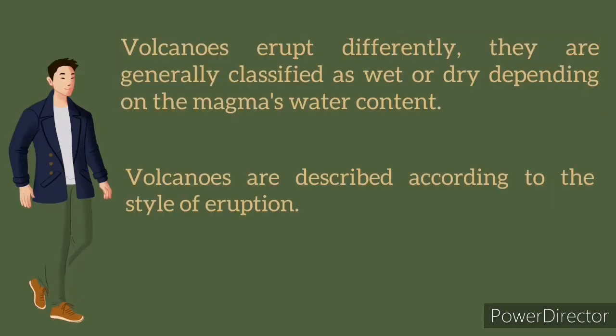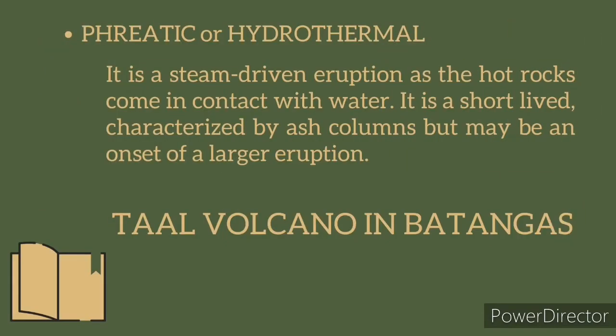Volcanoes erupt differently. They are generally classified as wet or dry, depending on the magma's water content. Volcanoes are described according to the style of eruption as follows. Let's start with phreatic or hydrothermal eruption. A phreatic eruption is a steam-driven eruption that occurs when hot rocks come in contact with water. It is short-lived, characterized by ash columns, but may be the onset of a larger eruption.